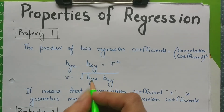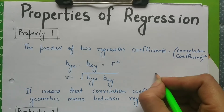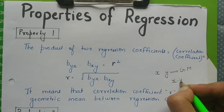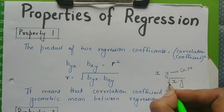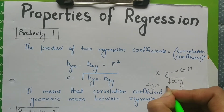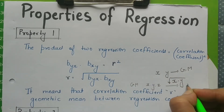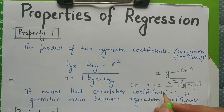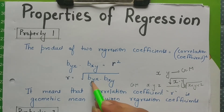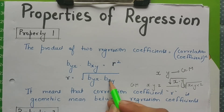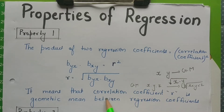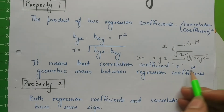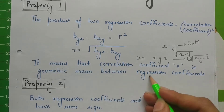What does this mean? It tells us that the correlation coefficient R is essentially the geometric mean of the two regression coefficients. The geometric mean of two variables x and y is the square root of (x into y). Similarly, for three variables x, y, z, the geometric mean is the cube root of (x·y·z). Here we have two regression coefficients; multiplying them and taking the square root means that Karl Pearson's coefficient of correlation R is the geometric mean between the two regression coefficients.